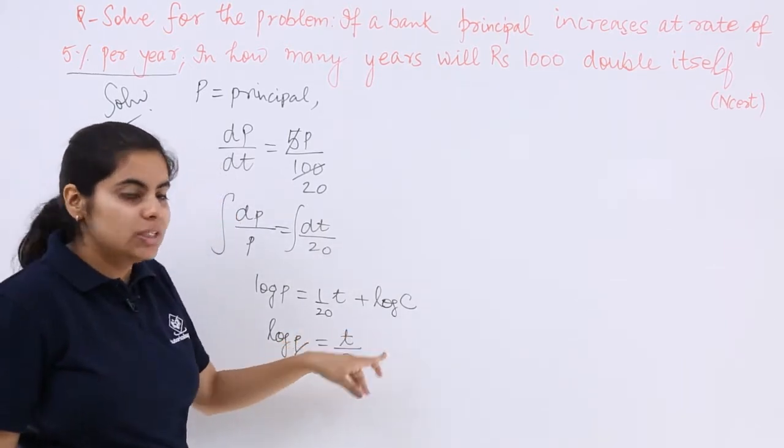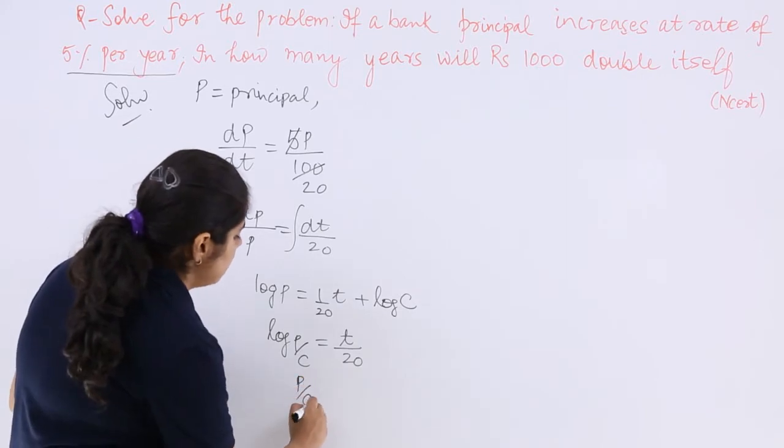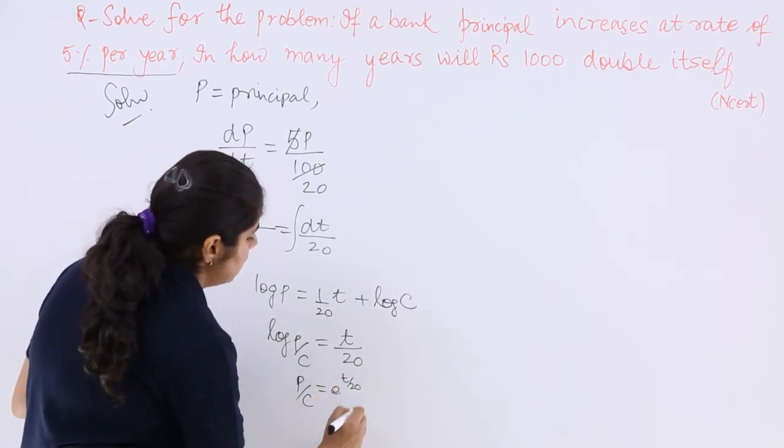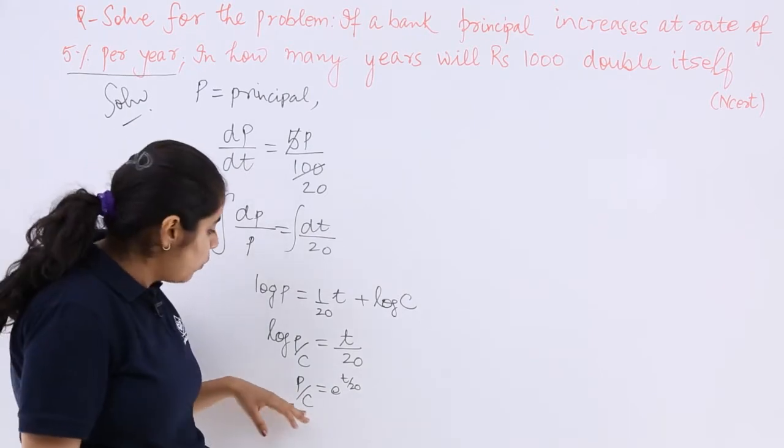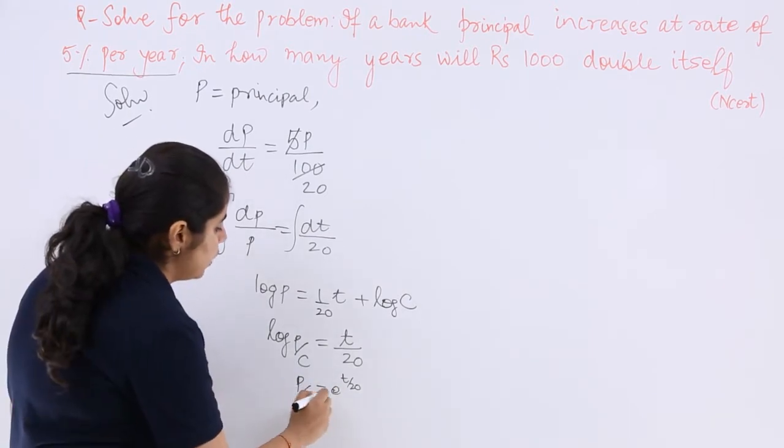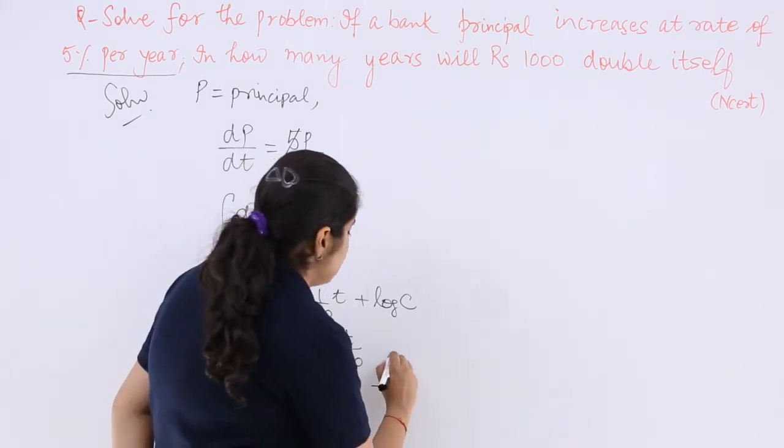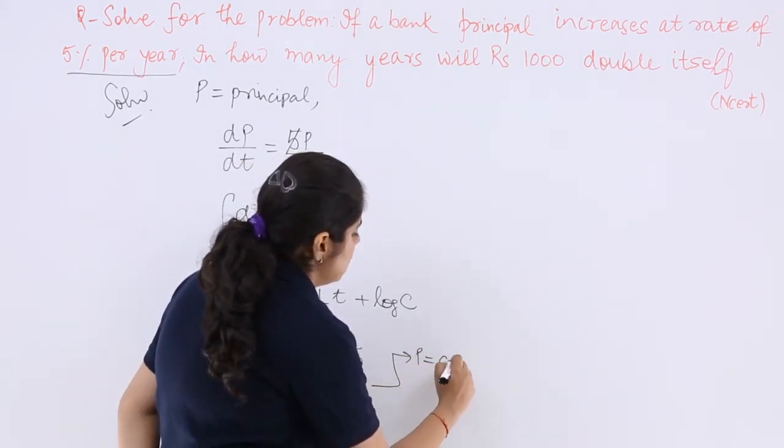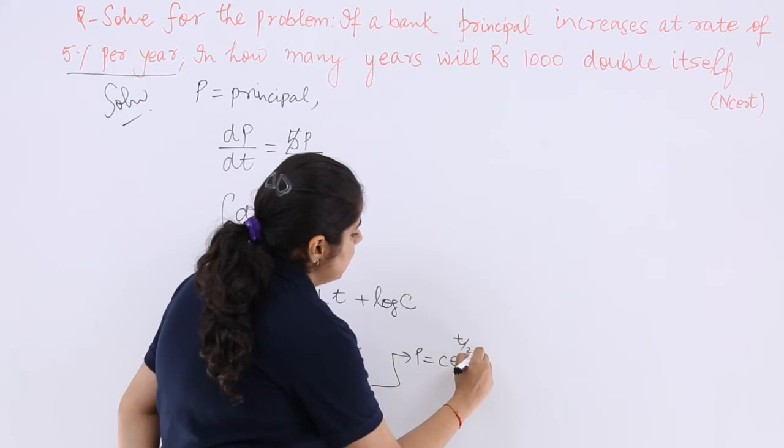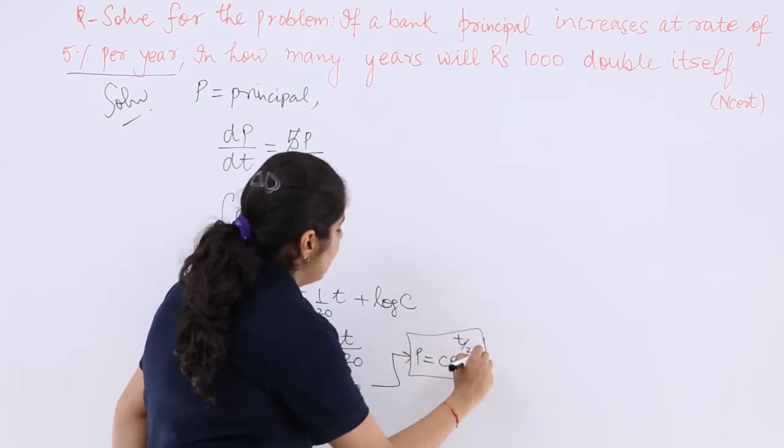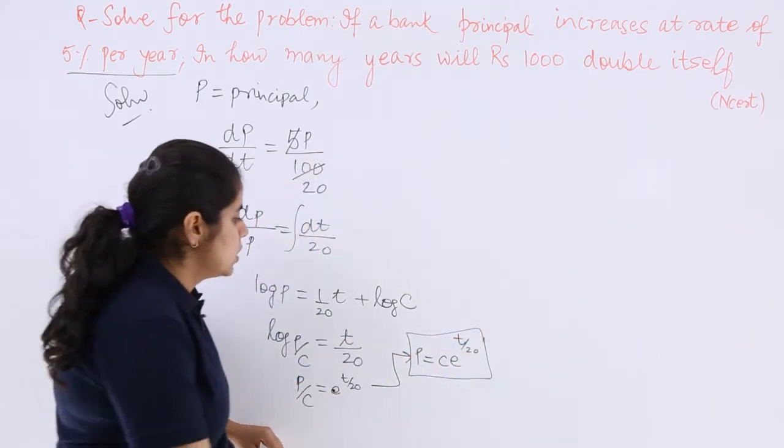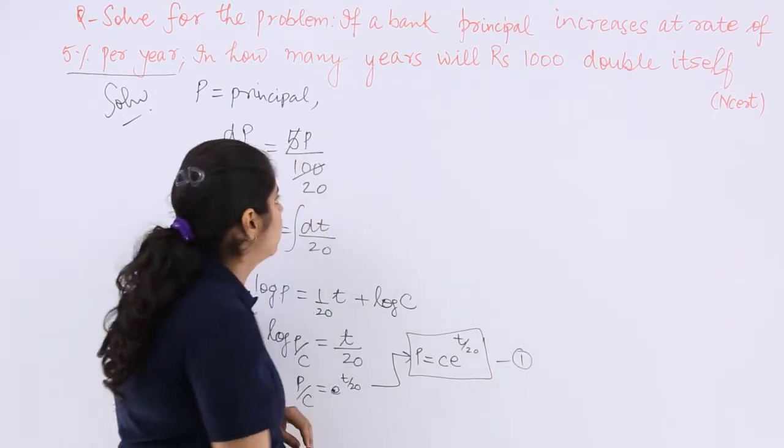Now log when goes to the other side, so it remains P/C. This becomes e raised to the power T/20. Now what is it like? This is one equation that we have got. Either we can leave it here or we can make it like P equals C*e^(T/20). And that can be named as equation 1.